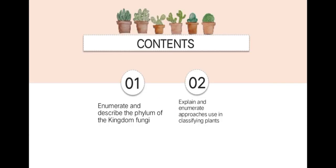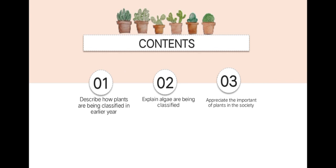Plant Systematics Unit 3. This topic will enumerate and describe the phylum of the Kingdom Fungi, explain and enumerate approaches used in classifying plants, describe how plants were classified in earlier years, explain how algae are classified, and appreciate the importance of plants in society.